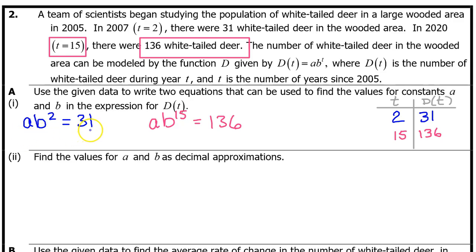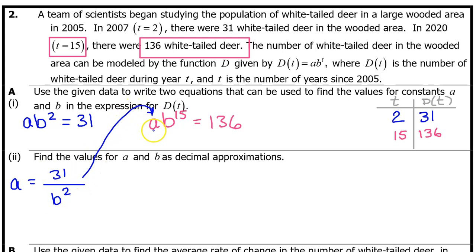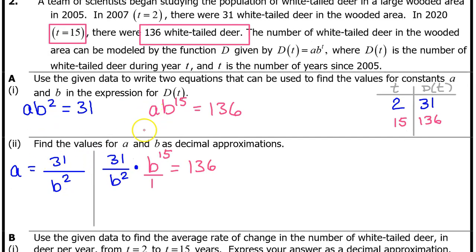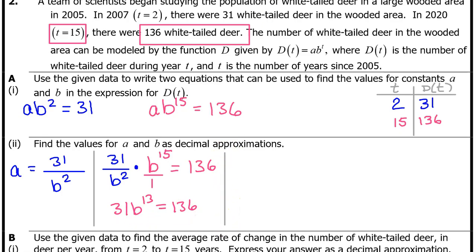Looking at the first equation, we can isolate a by dividing both sides by b squared, giving us a equals 31 over b squared. Substituting this into the second equation gives us 31 over b squared times b to the 15th power equals 136. The b squared cancels two of the b's in the numerator, leaving 31 times b to the 13th power equals 136. Dividing both sides by 31 gives b to the 13th equals 136 over 31.